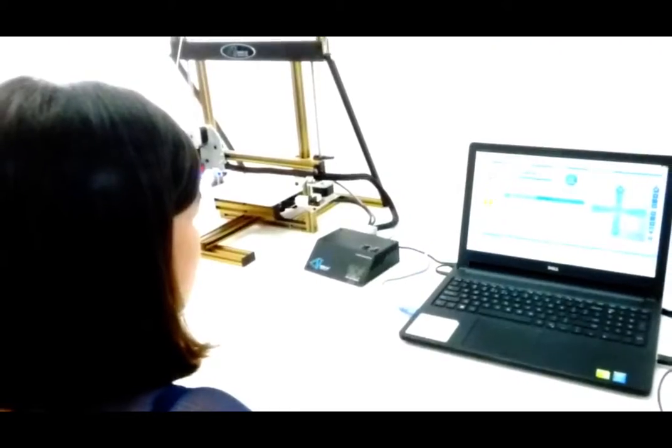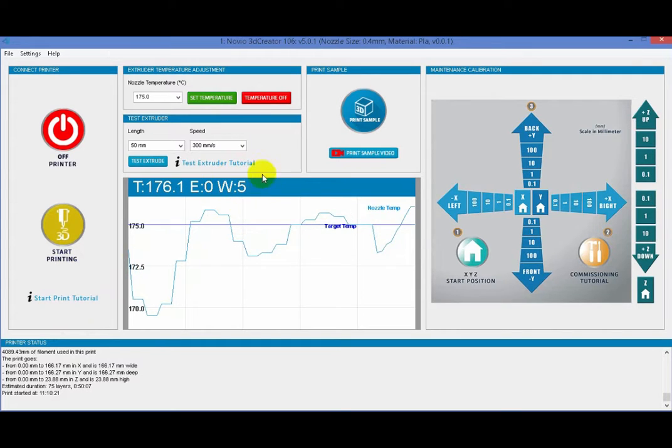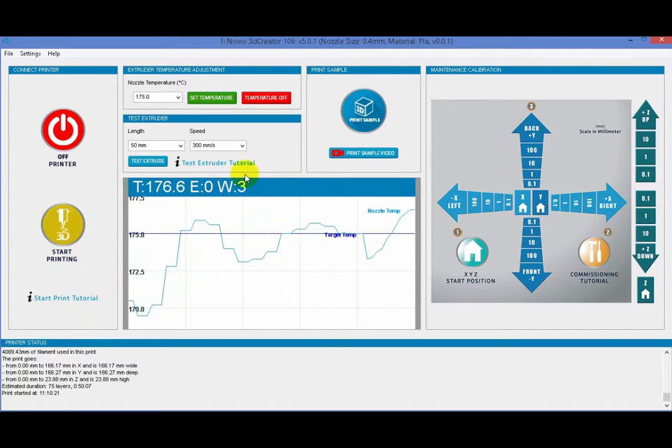The temperature graph will display a countdown from 9 to 0. Once the button hits 0, it will automatically extrude 10 millimeters of filament.